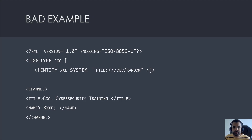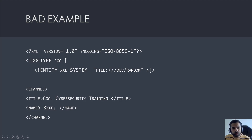Now let's see the bad example. Instead of just a string, I changed the entity to use SYSTEM and then reference some internal file. Whenever a user displays this, instead of the actual string, they'll be able to see the content of that file. This is the impact of the vulnerability, and we'll see the demo of how this actually happens in the real world.